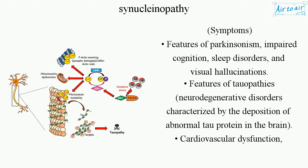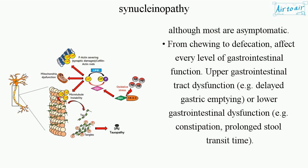Features of tauopathies — neurodegenerative disorders characterized by the deposition of abnormal tau protein in the brain. Cardiovascular dysfunction, although most are asymptomatic. Gastrointestinal function is affected from chewing to defecation, at every level.